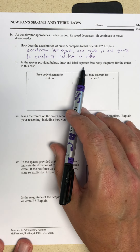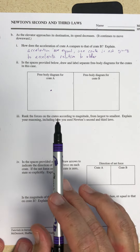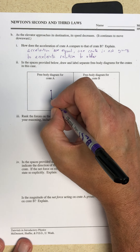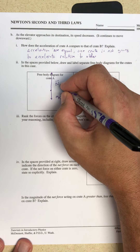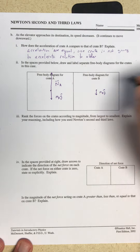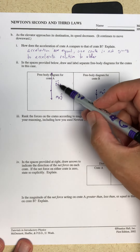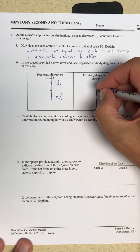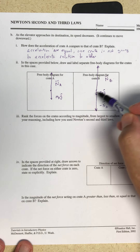In the spaces provided below, draw and label separate free body diagrams for the crates in this case. Now the elevator is moving down and slowing, so the acceleration points up. I need a net force that is upward. The weight of crate A has not changed, but there is a stronger support force on crate A. For crate B: the weight of crate B has not changed, and the floor exerts a larger force on crate B — bigger than the sum of B's weight and the contact force from A.